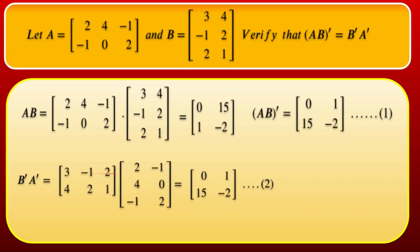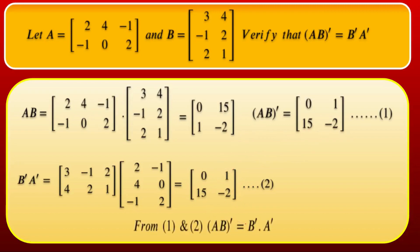Now compute B^T · A^T. B^T = [[3,−1,2],[4,2,1]] and A^T = [[2,−1],[4,0],[−1,2]]. Multiplying: first row first column: 3·2+(−1)·4+2·(−1) = 6−4−2 = 0; first row second column: 3·(−1)+(−1)·0+2·2 = −3+0+4 = 1; second row first column: 4·2+2·4+1·(−1) = 8+8−1 = 15. Similarly second row second column = −2.